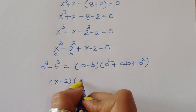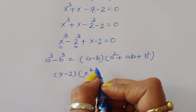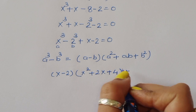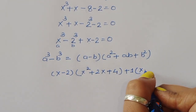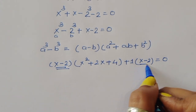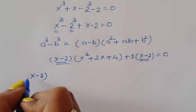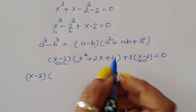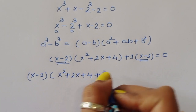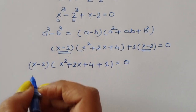So x minus 2 times x squared plus 2x plus 4, plus 1 times x minus 2, is equal to zero. Now we have x minus 2 in both terms, so we can take x minus 2 as a common factor.